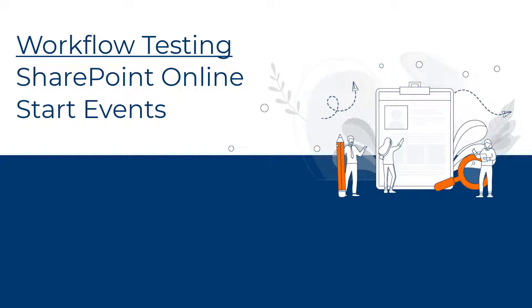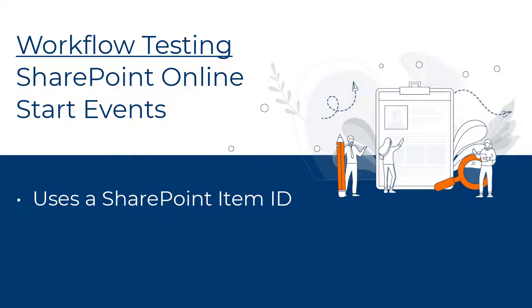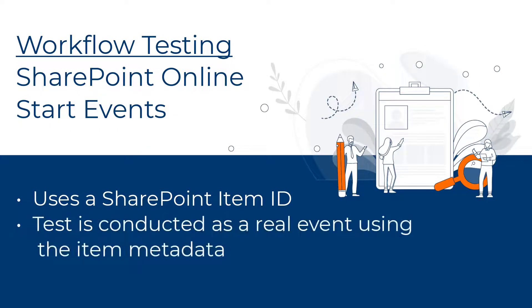In this video, I will show you how to use the manual start and workflow testing for SharePoint Online Start events. The functionality allows you to use the item ID of an existing list item to test or manually start a workflow with a SharePoint Online Start event. The details of the item are passed and used as a real event to test or start the workflow.